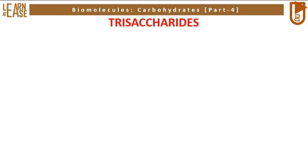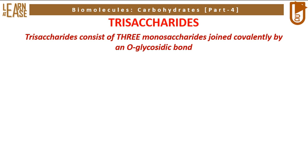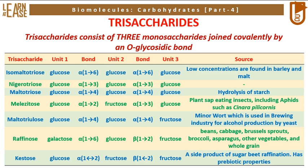Let me define trisaccharides and describe some well-identified trisaccharides. Trisaccharides consist of three monosaccharides joined covalently by O-glycosidic bonds. Some well-identified trisaccharides are isomaltotriose, nigerotriose, maltotriose, melezitose, maltotriulose, raffinose, and kestose. These are represented in a tabular format along with details of their monomeric units, the type of O-glycosidic linkage, their occurrence, and their function.